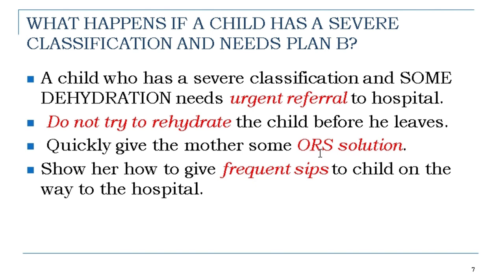What happens if a child has a severe classification and needs Plan B? A child who has a severe classification and some dehydration needs urgent referral to hospital. Do not try to fully rehydrate the child before he leaves. Quickly give the mother some ORS solution and show her how to give it to the child on the way to the hospital.